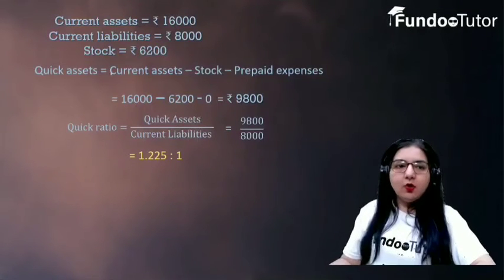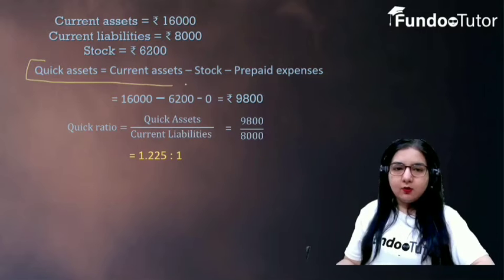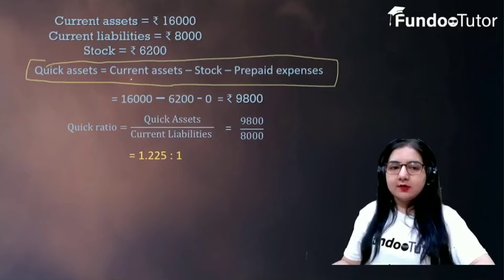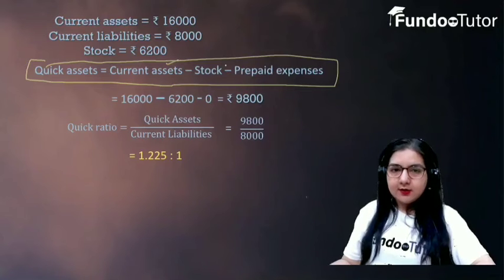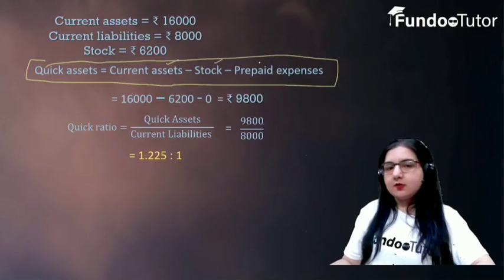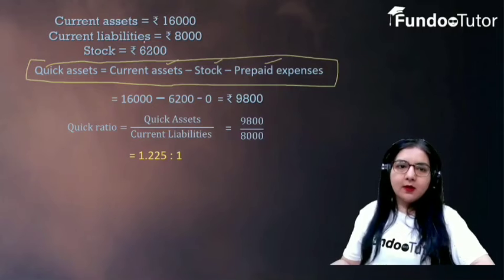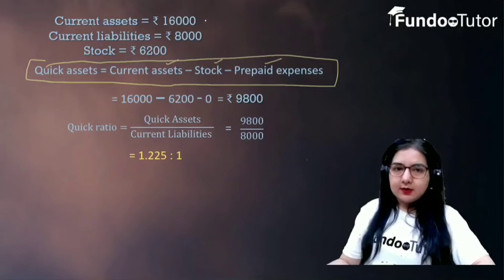Now we will calculate the quick ratio. Quick ratio को calculate करने के लिए हमें चाहिए quick assets। Quick assets का formula होता है: quick assets is equal to current assets minus stock minus prepaid expenses. Current assets हम calculate कर चुके हैं।